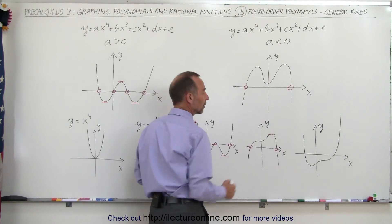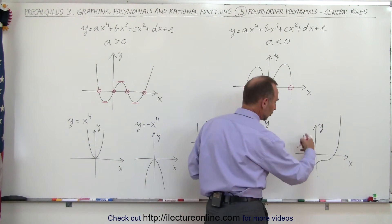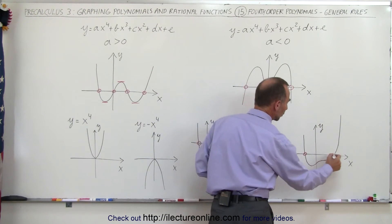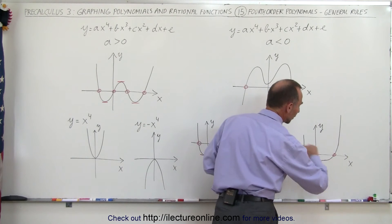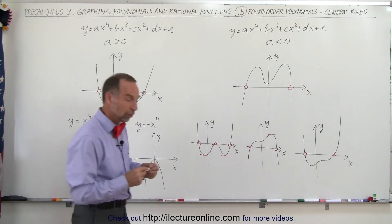And of course, when the graph is upside-down, you can have a similar situation in the opposite direction. One root, two roots, and here we have what we call an inflection point.